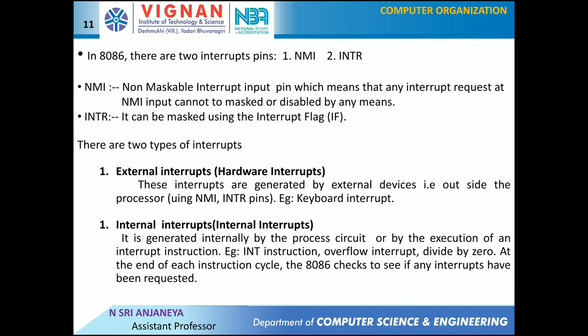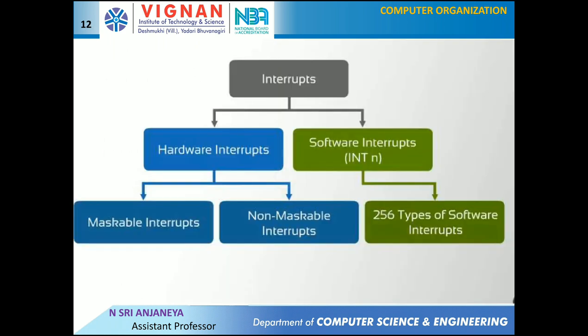External interrupts are generated by external devices outside the processor — for example, keyboard, printer, or disk interrupts. Internal interrupts are generated internally by the processor circuits or by execution of an interrupt instruction. The interrupt instruction is the INT instruction. In your program, if you want to generate a software interrupt, you do so by executing the INT instruction. Hardware interrupts are categorized as maskable or non-maskable. There are 256 types of software interrupts.